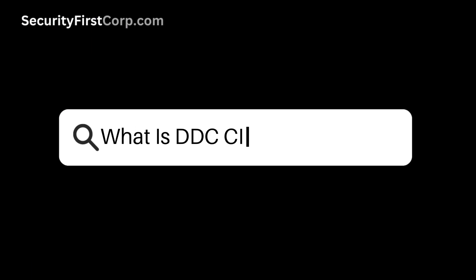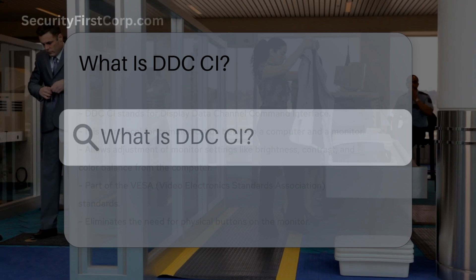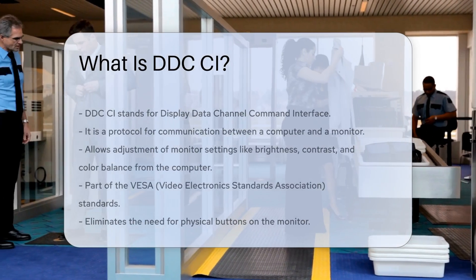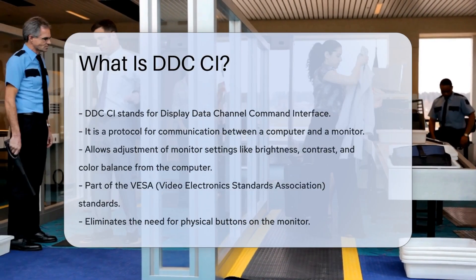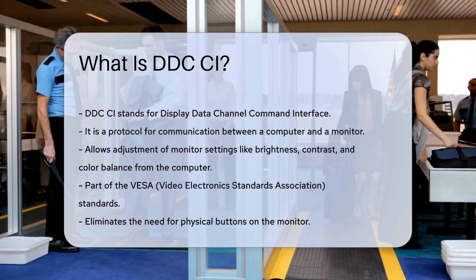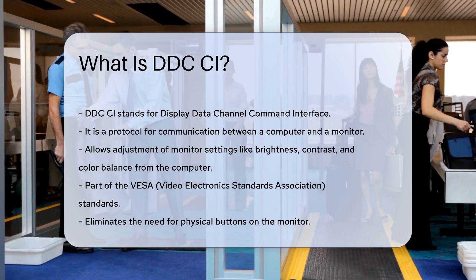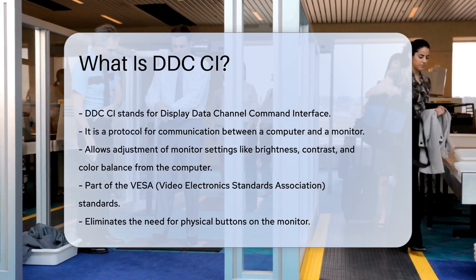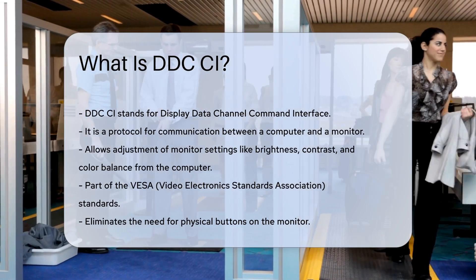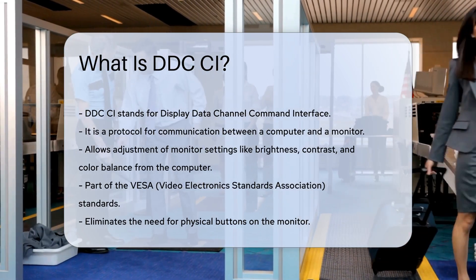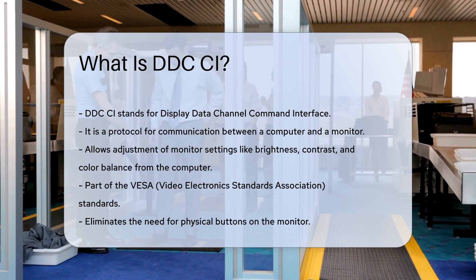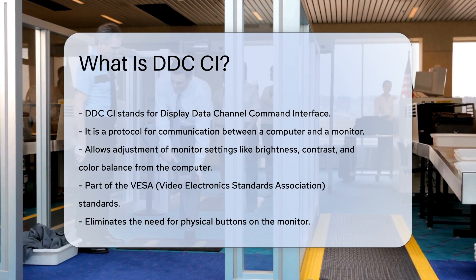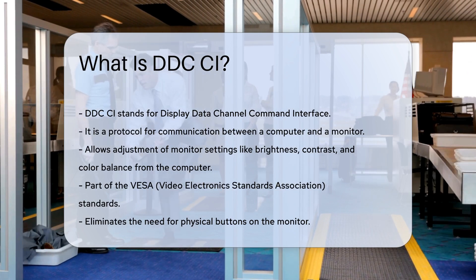What is DDC/CI? DDC/CI stands for Display Data Channel Command Interface. It is a protocol that allows communication between a computer and a monitor. This interface enables the computer to send commands to the monitor to adjust settings such as brightness, contrast, and color balance.